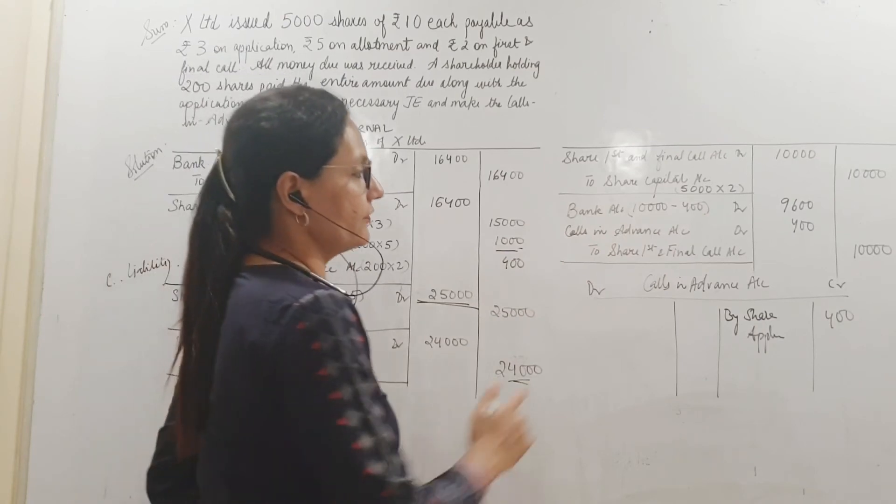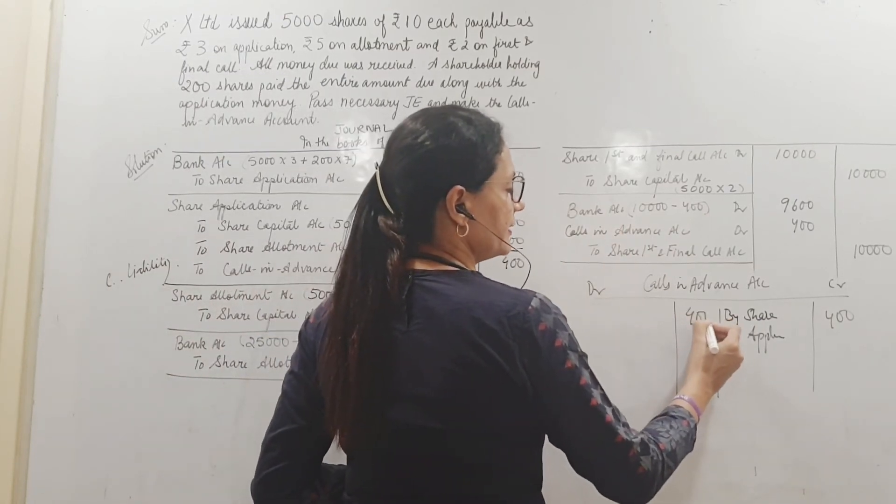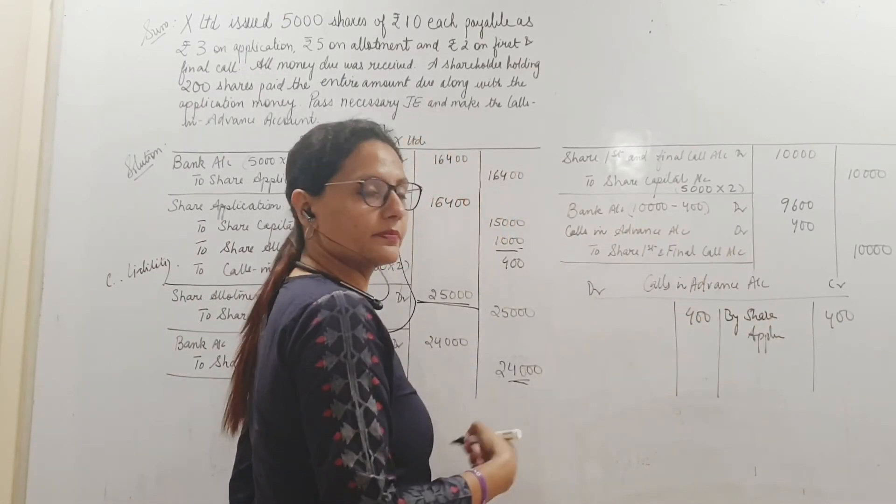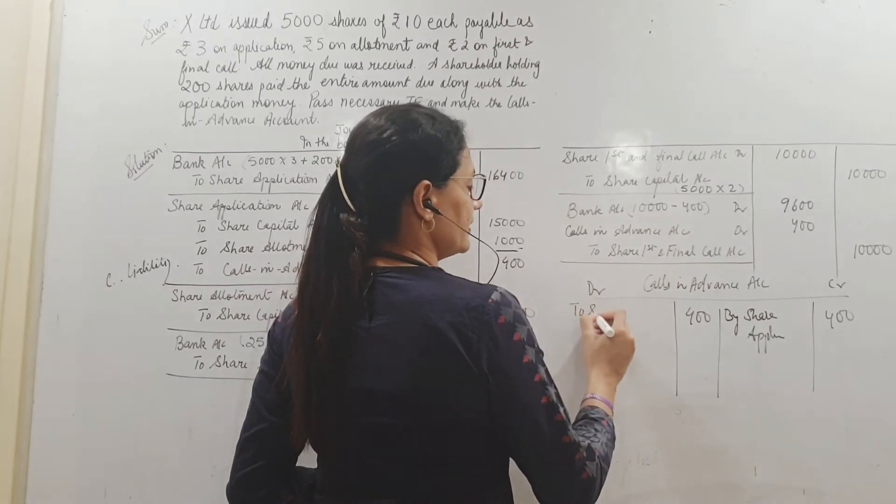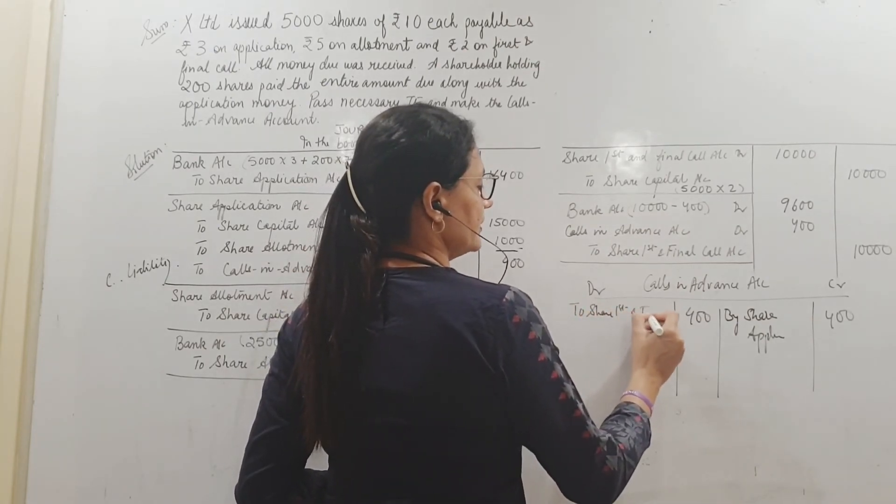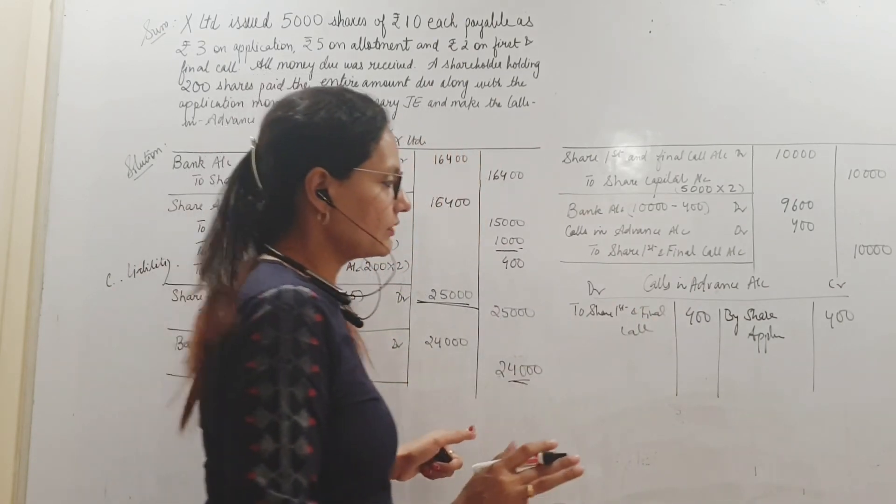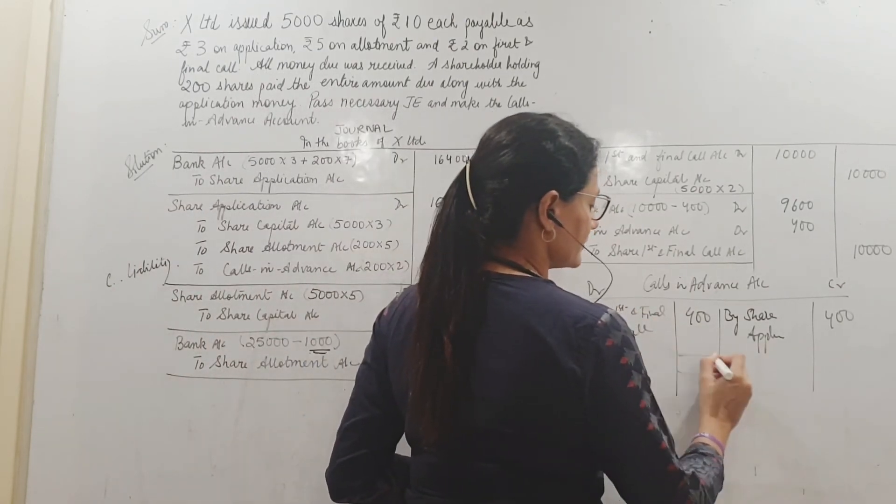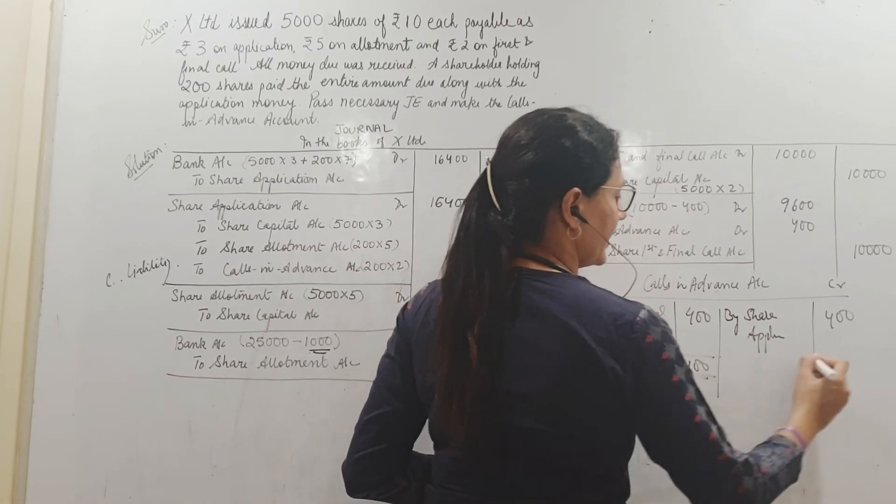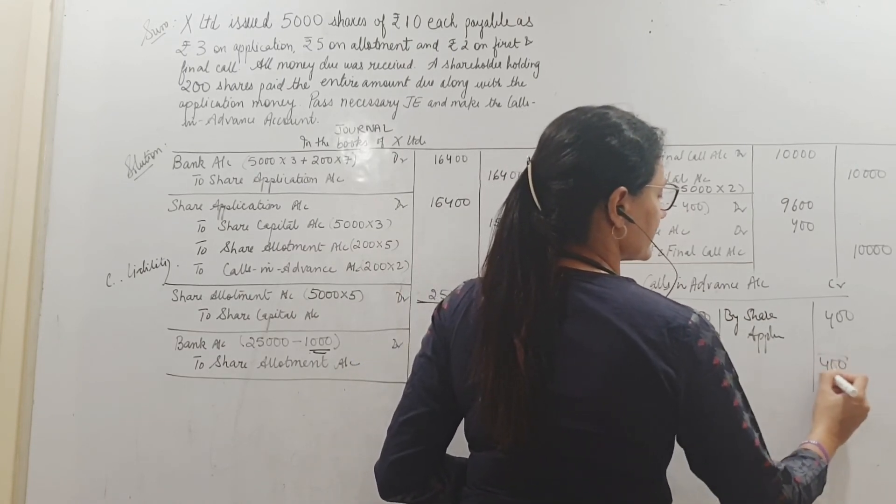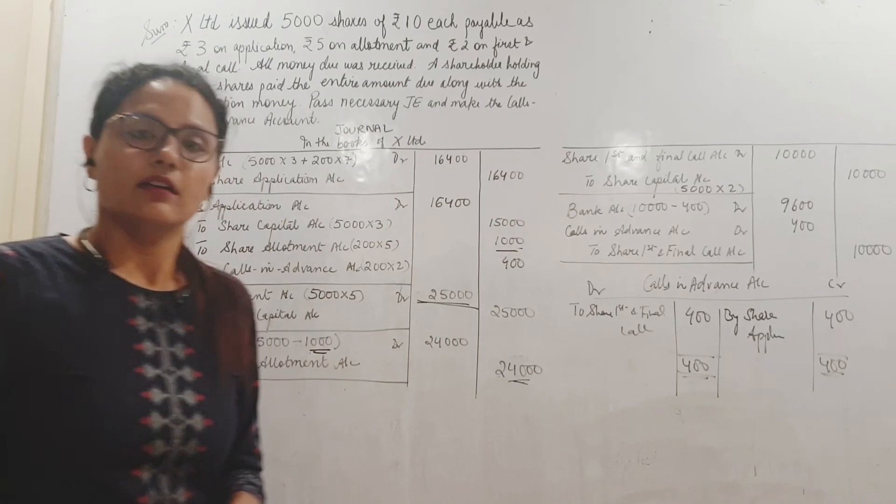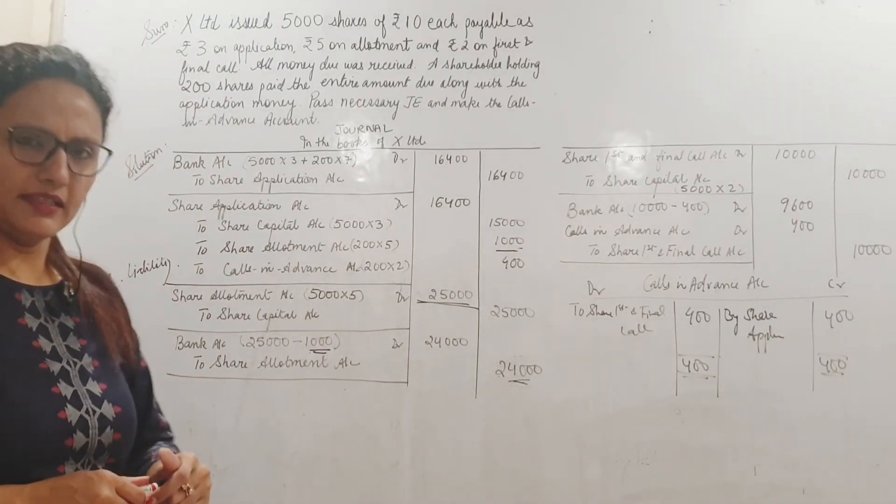So this account was opened like that. And next when is share calls in advance coming into picture? Here, when I am debiting it with 400. So debit side of the account. And which account am I correspondingly crediting? Share first and final call. So this account is closed. No balance left here. So 400 and 400. Pretty simple. Good enough.